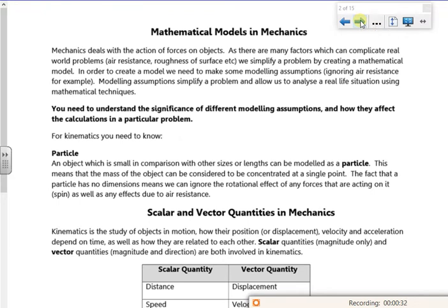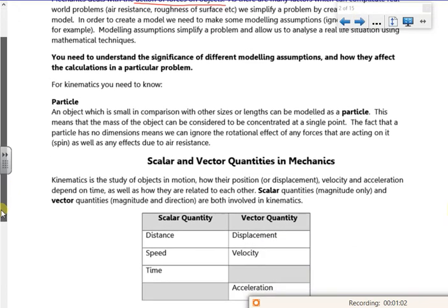So it says here that mechanics deals with the action of forces on objects. So in real life there's loads of stuff going on, but we make it easier for us. We make assumptions and we kind of do things like ignore air resistance. It just makes it easier for us.